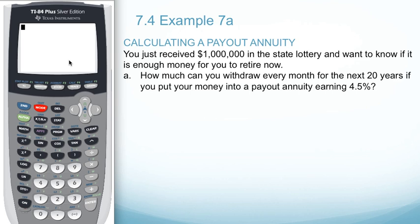In example A, we'll be calculating a payout annuity using the TVM solver. You just received a million dollars in the state lottery and want to know if it's enough money for you to retire now. How much can you withdraw every month for the next 20 years if you put your money into a payout annuity earning 4.5%?